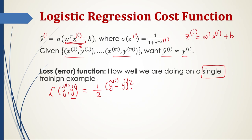It's not used in logistic regression because when you come to learn the parameters, the optimization problem becomes non-convex. We end up with multiple optima, and gradient descent may settle on one of the local minima rather than discovering the global optimum. That is why we will not use this loss function in logistic regression.